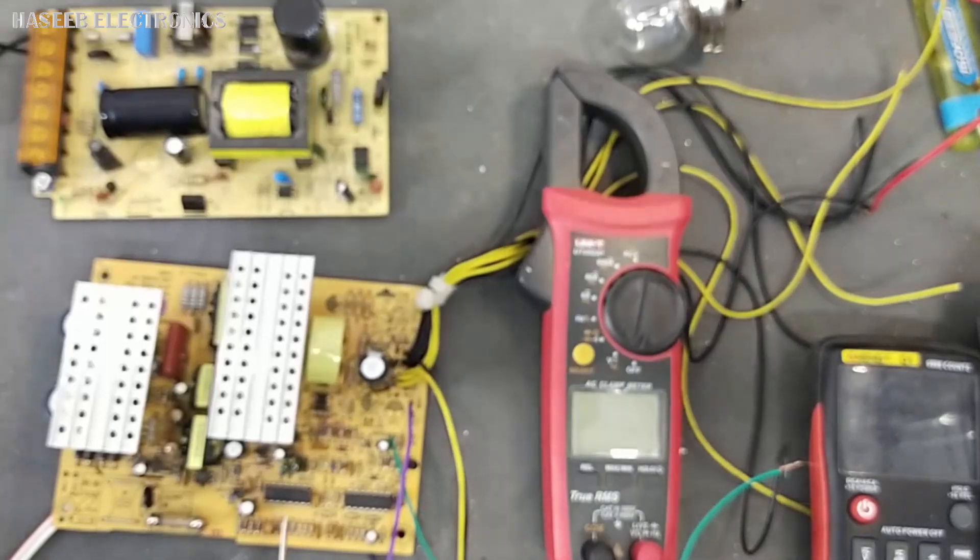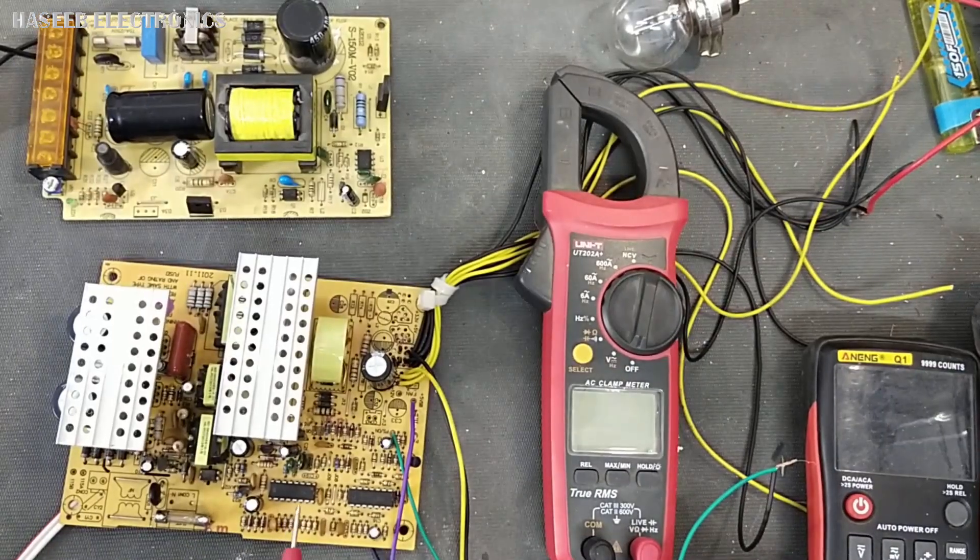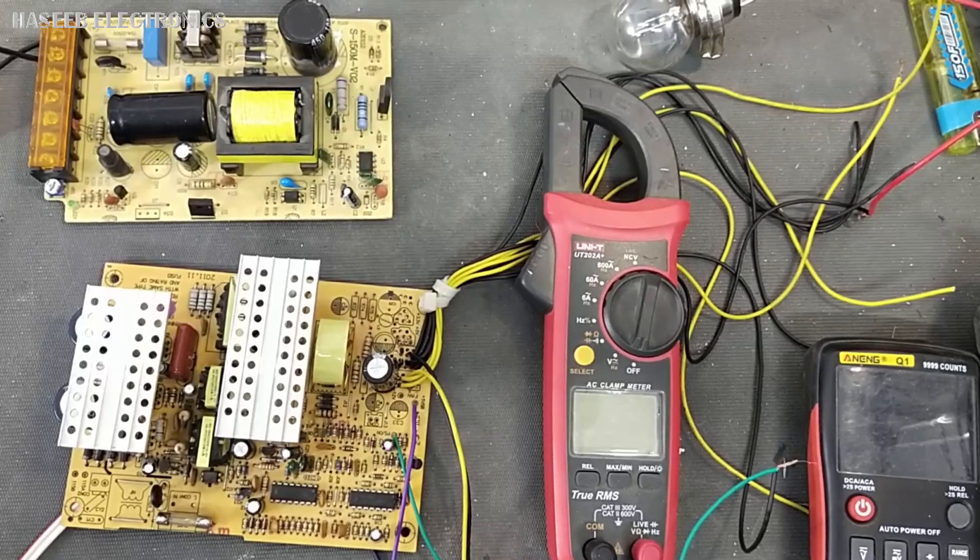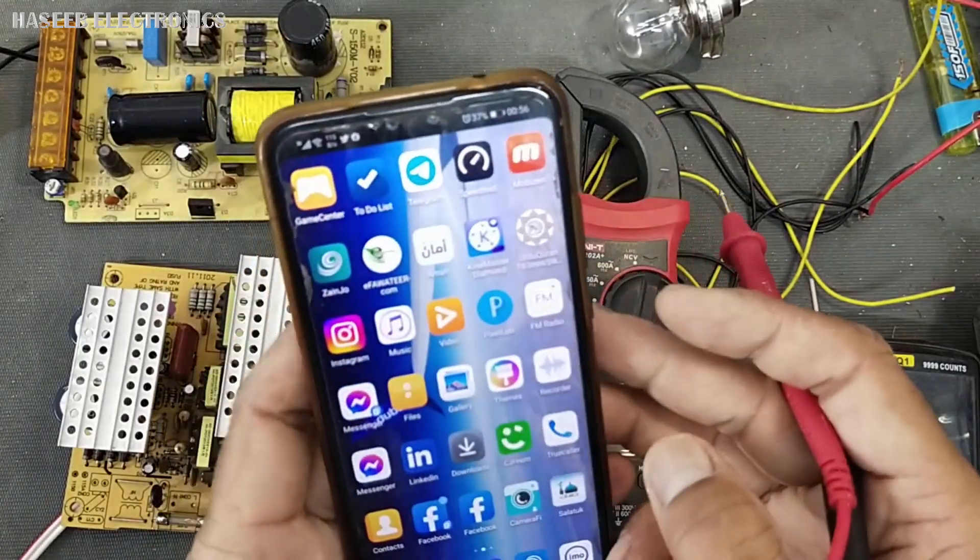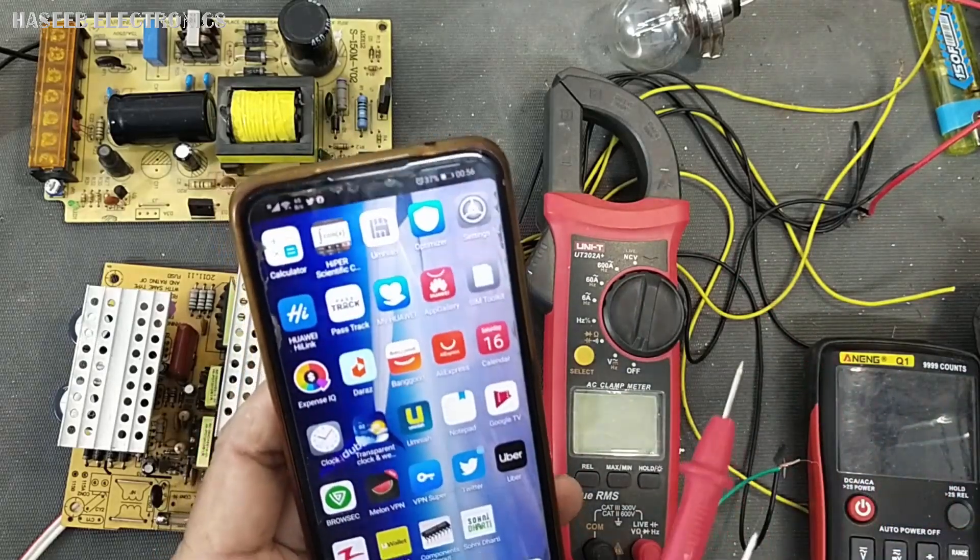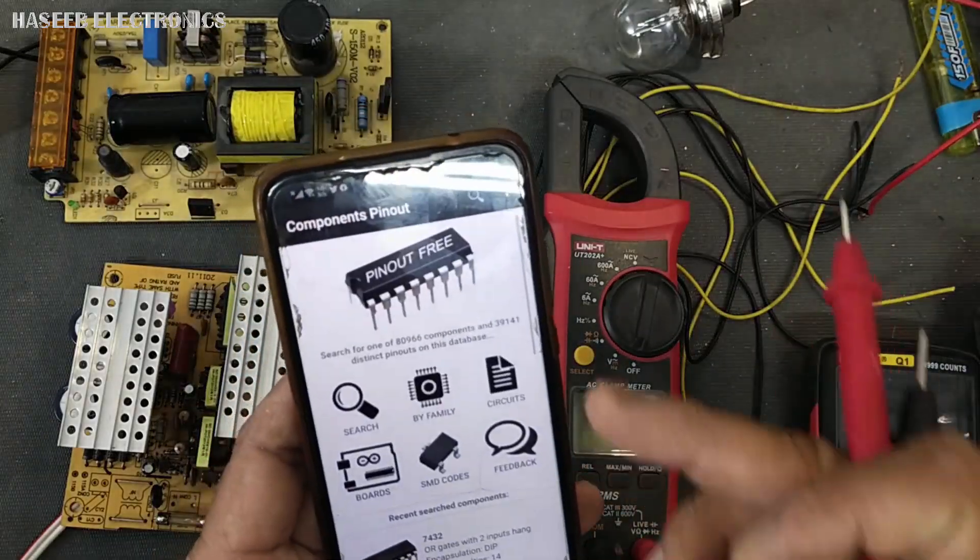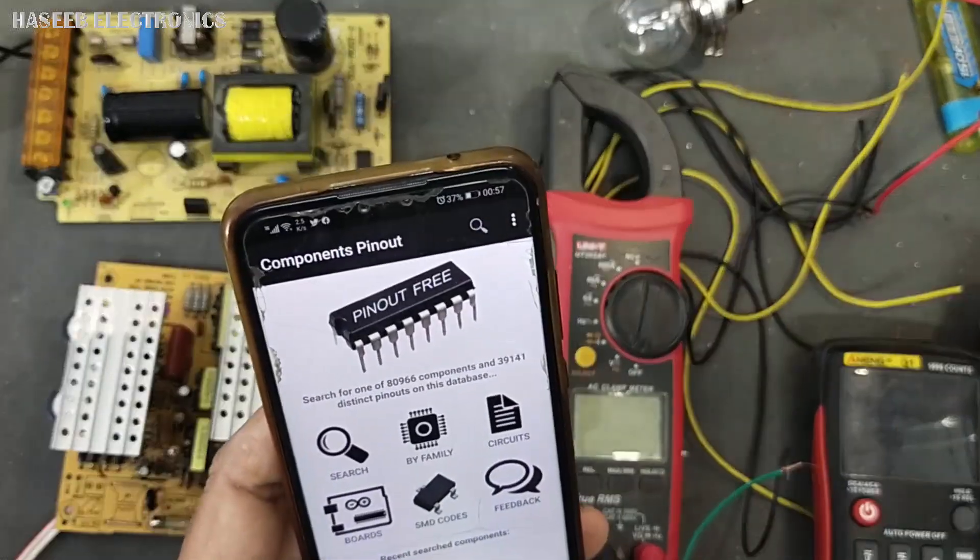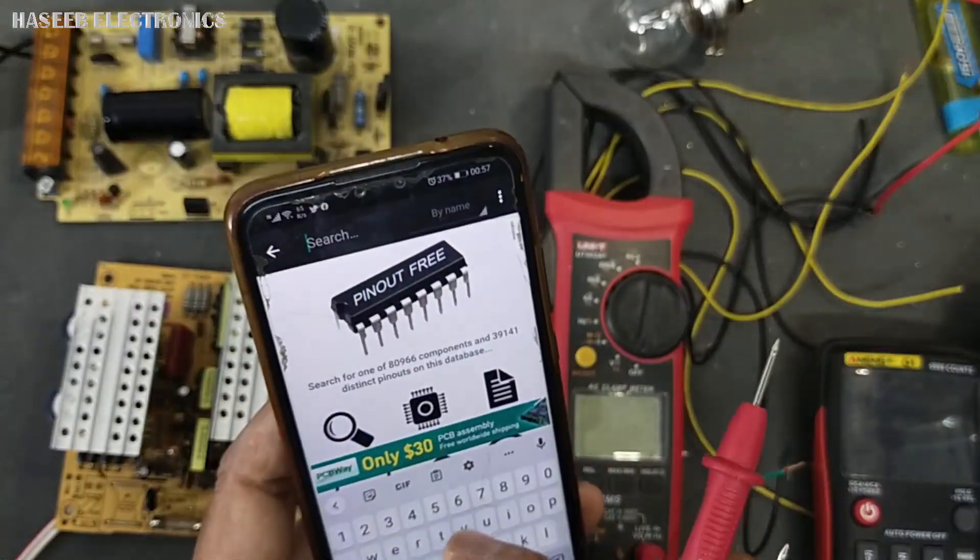To test a drive signal for any IC, first of all go to its datasheet, its pinout. For that purpose, I shared in my last video that you can use Component Layout, this application in your mobile, and type the number of this IC.